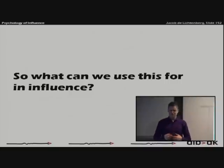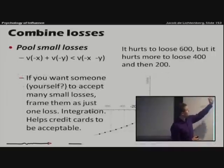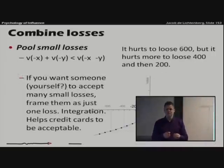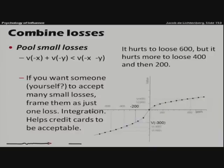So how can we use this in influence? Well, first of all, if we have to sell people something, for example, they're going to lose something, they're going to lose money. So we have different fees, we have different small losses, you should actually try to pool them. Why so? Let's look at the math. First of all, as you'll see here, the loss is bigger for two small losses than it is for one big. So if you want someone to accept many small losses, just frame them as one loss. We call this the integration and it helps credit cards to be acceptable. They kind of sum it all together.